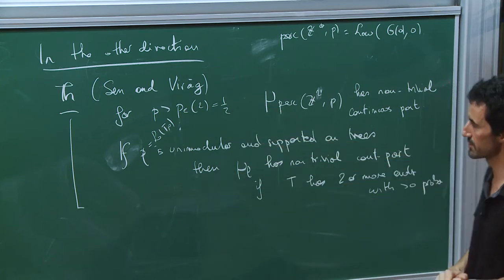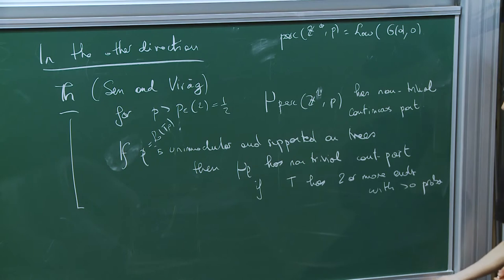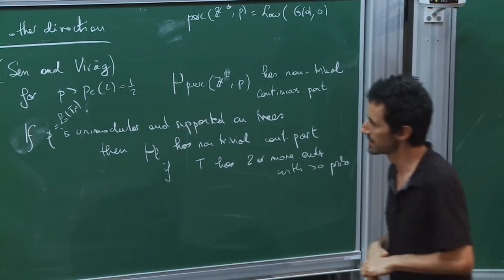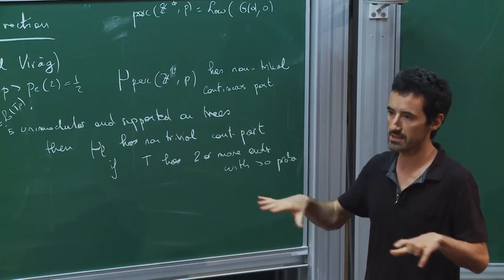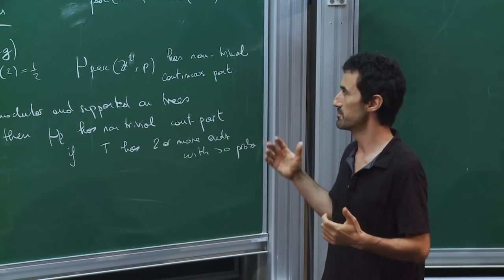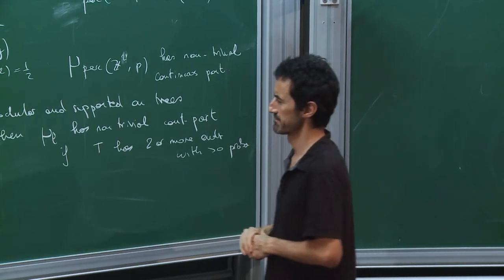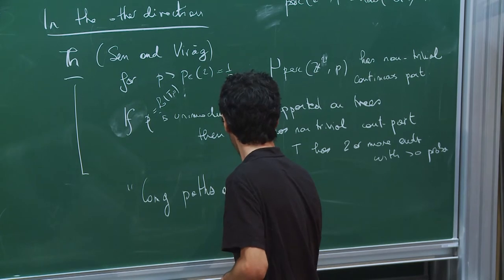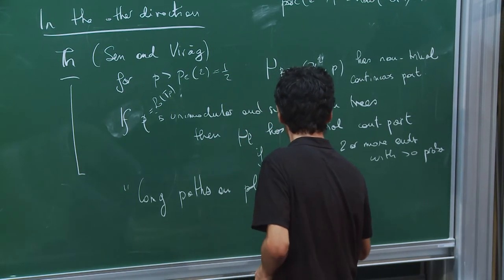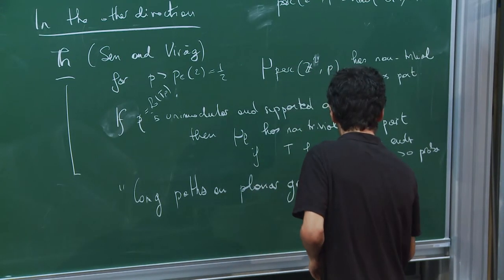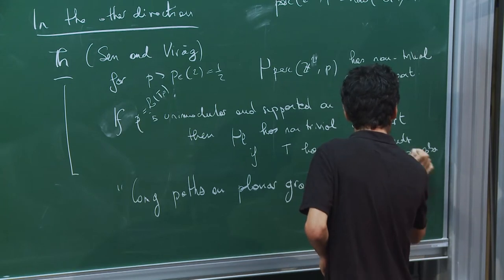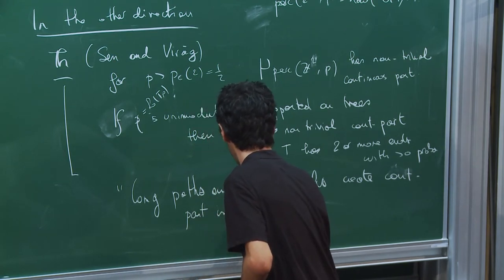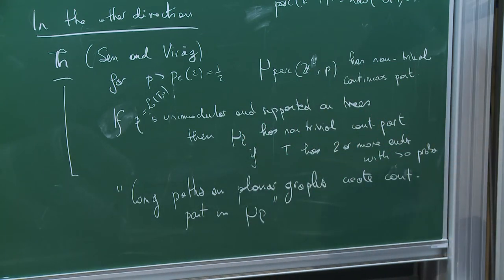The proofs of both statements rely on a quantitative observation: as soon as you have a long path that almost covers your graph — on planar graphs and trees — you must have some continuous part. The philosophy is: long paths on planar graphs create a continuous part.